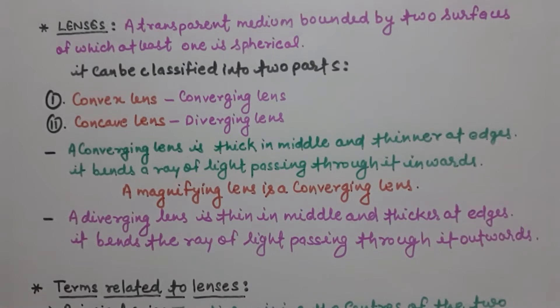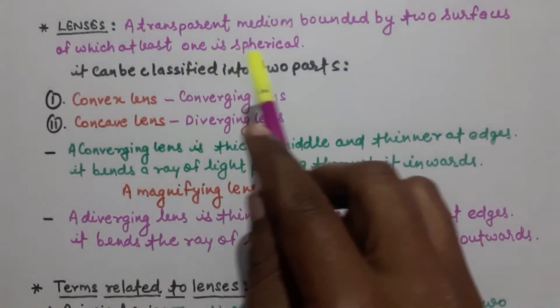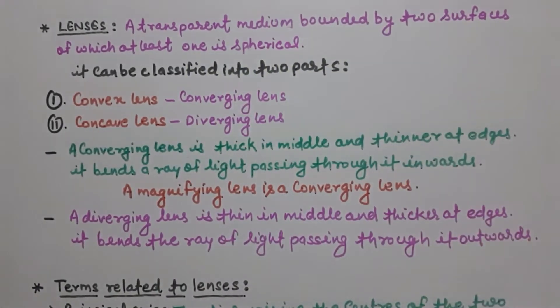So students, in today's class we know about lenses. What are lenses? Let's see. A transparent medium bounded by two surfaces of which at least one is spherical. Means a transparent medium, two surfaces which are bounded, and at least one surface which is spherical. Is clear?